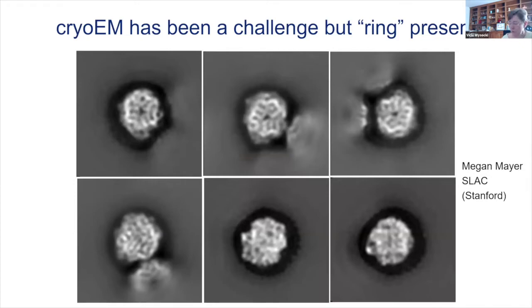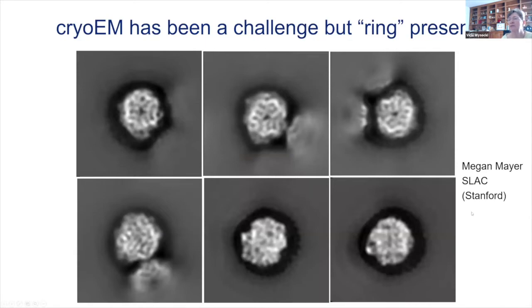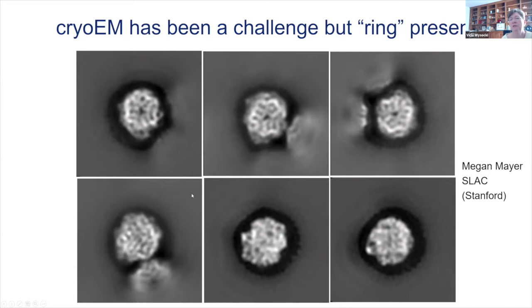Cryo-EM had not been done at the time we published the mass spec paper. After publication, Bradley Thibault sent the complex to Stanford, where Megan Meyer did the cryo-EM experiments. The images they sent back showed ring-like structures, which was very pleasing after we had predicted this from mass spec. However, Stanford said the complex was too heterogeneous and returned it to Oregon Health Sciences University to continue. Again, this is a case where cryo-EM is a challenge, but mass spec data let us make progress and may help interpret future cryo-EM data.